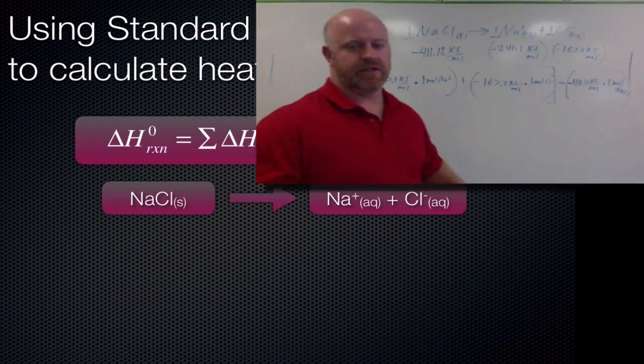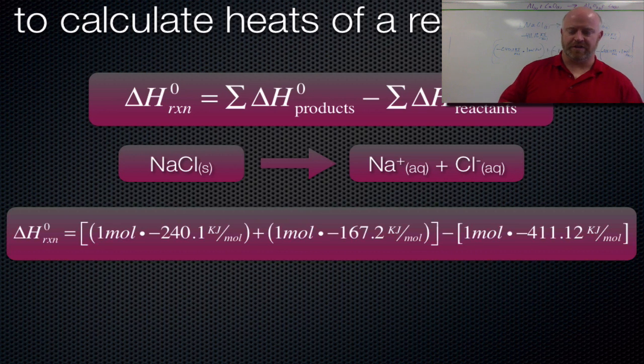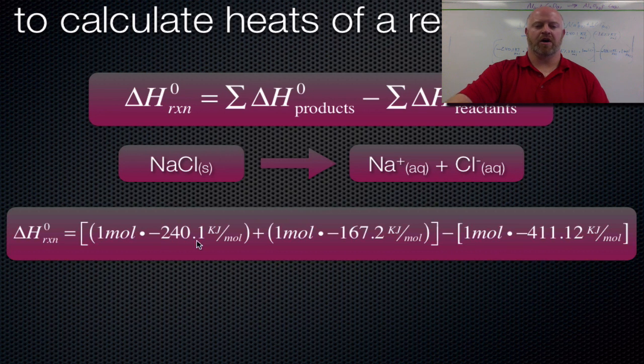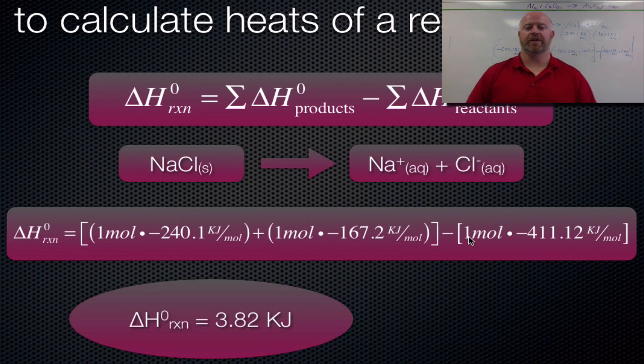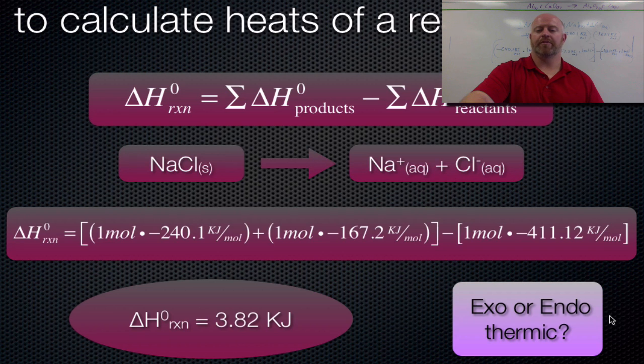So if you plug all these numbers in, we get an equation that looks like this on our screen. So we have our sodium, we have our chlorine, we have the number of moles of each one of those, we have our sodium chloride, its moles, and we put the math in, and we get 3.82 kilojoules. So the heat of reaction for this process is 3.82 kilojoules. It's a positive number. So being a positive number, it tells you that this reaction is actually endothermic, which means it's going to get cold as you dissolve this stuff.